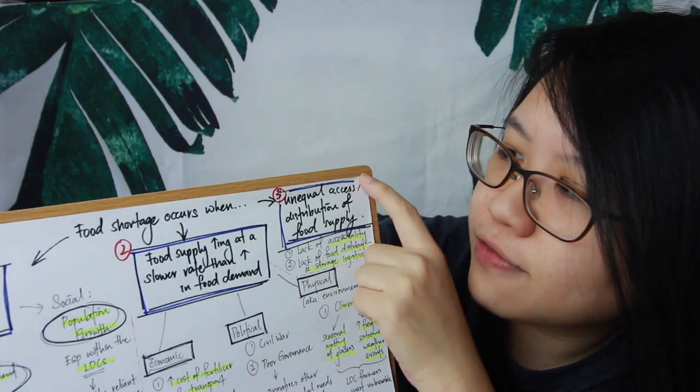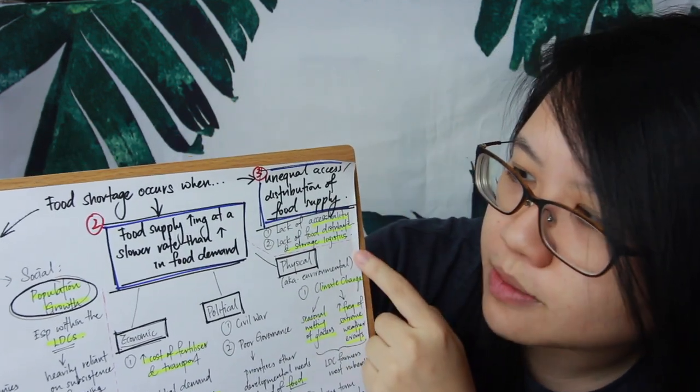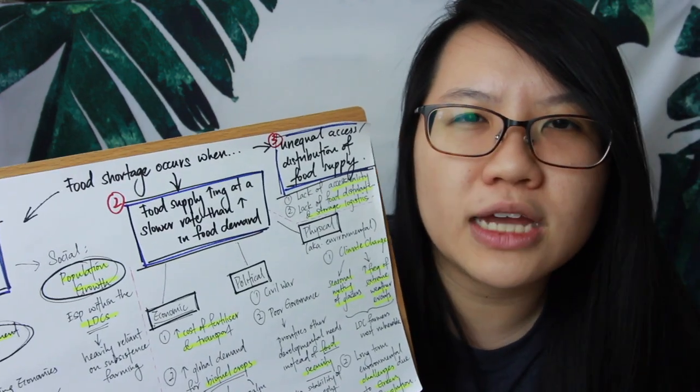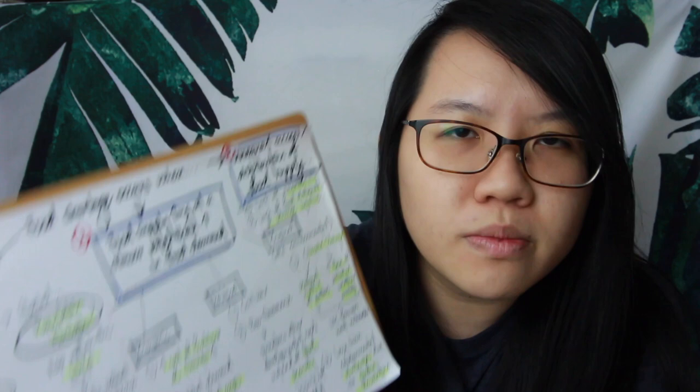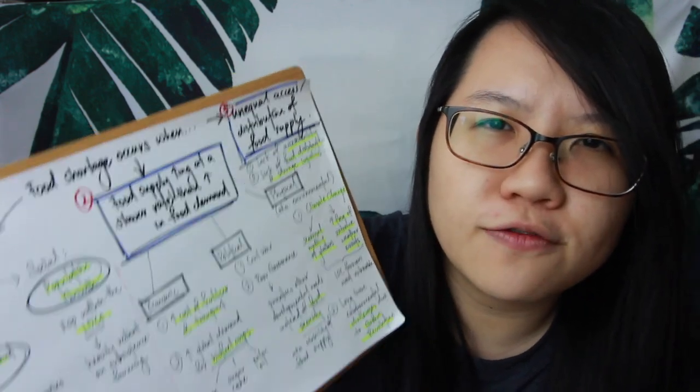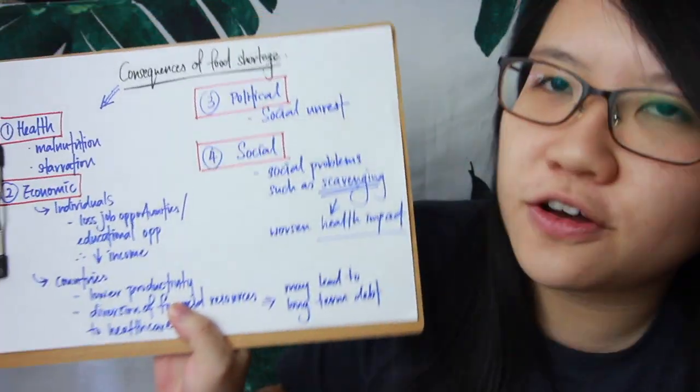Unequal access and distribution of food supply affects LDC communities that are rural or remote and hard to reach. Without proper transportation infrastructure and storage facilities, even if there is sufficient food supply, communities can still experience food shortage because food cannot reach them, especially when local food supply is running low.